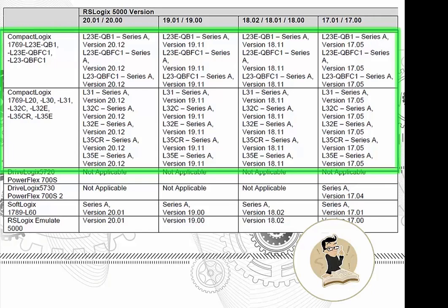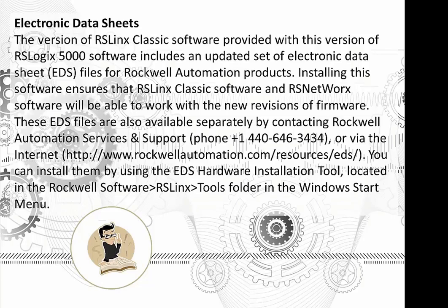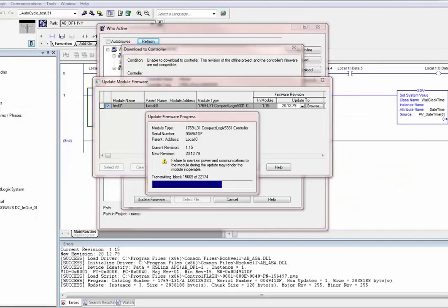Electronic Data Sheets — EDS files: in RSLinx if an object shows up in the communication tree with a question mark instead of a red X, it may mean RSLinx sees it but doesn't know what it is because it doesn't have an EDS file for that part number. You can go to www.rockwellautomation.com/resources/eds, type in the part number, and download the EDS files. Then go into RSLinx Tools and find the EDS Hardware Installation Tool. This also works for DeviceNet, EtherNet/IP, and ControlNet.